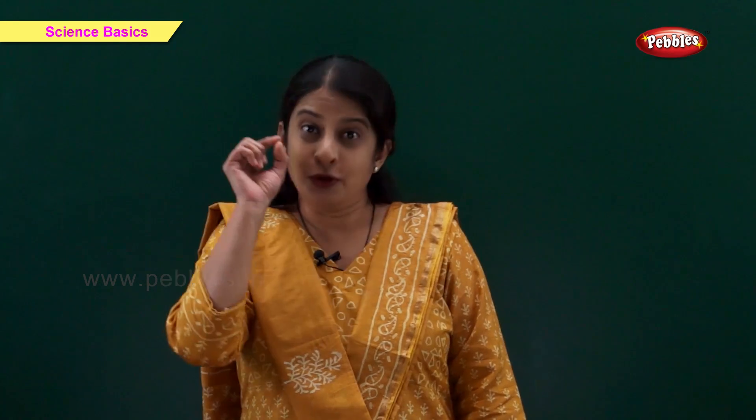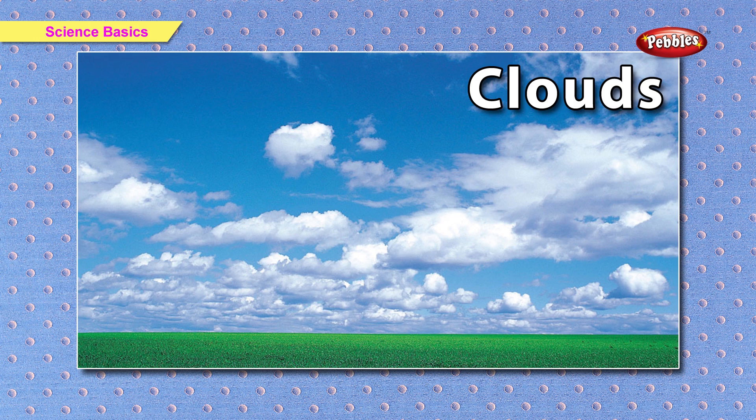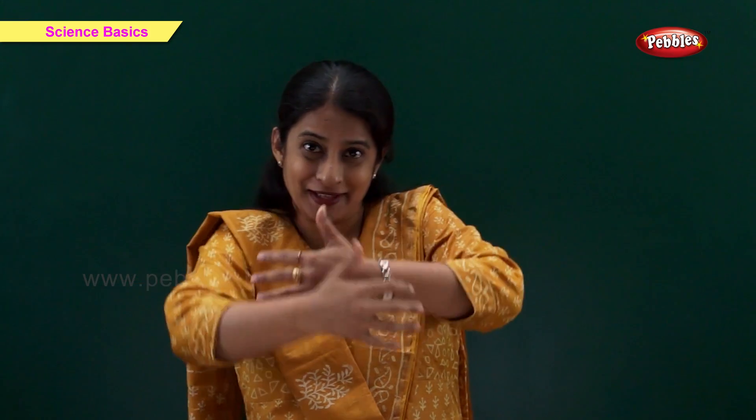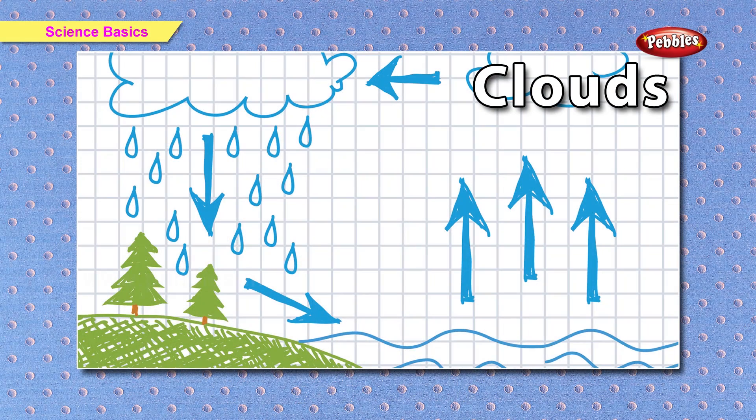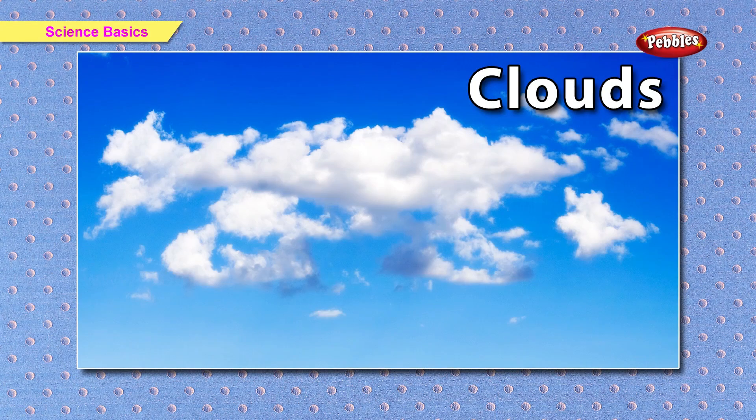A cloud is a large collection of tiny droplets of water. The droplets are so small and light that they can float in the air. When lots of small water droplets come together, they become a cloud. The clouds move with the wind.